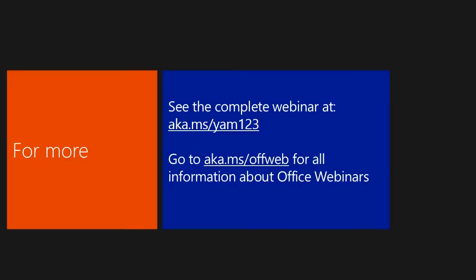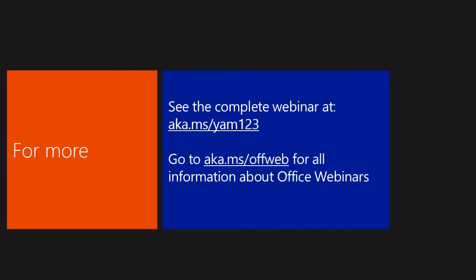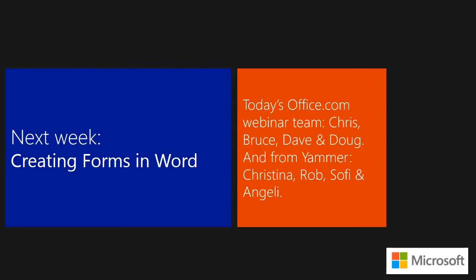There's a lot more to talk about with Yammer. You can find more information, including how to get it and pricing, by going to aka.ms/yam123 — we'll also have the recording of this webinar posted there in a few days. For information about the Office webinar series in general, go to aka.ms/offweb. Next week we'll talk about creating forms in Word. Thank you for joining this Office 15-minute webinar.